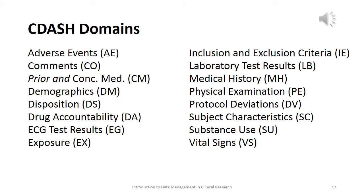This slide illustrates the 16 CDASH domain tables — the primary domains common in most clinical trials, which you've seen in our exercises. These include: adverse events, comments, prior and concomitant medications, demographics, disposition, drug accountability, ECG test results, exposure, inclusion and exclusion criteria, laboratory test results, medical history, physical exam, protocol deviations, subject characteristics, substance use, and vital signs. Several of these appeared in our data entry exercises — concomitant medications, medical history, physical exam, and adverse events.